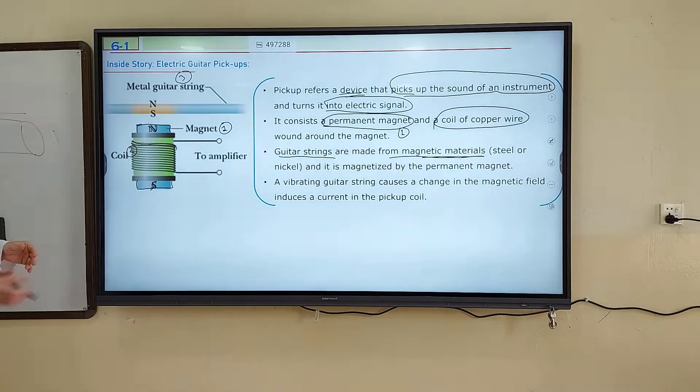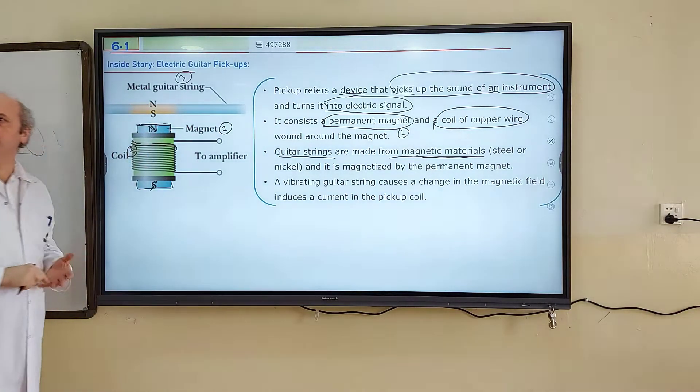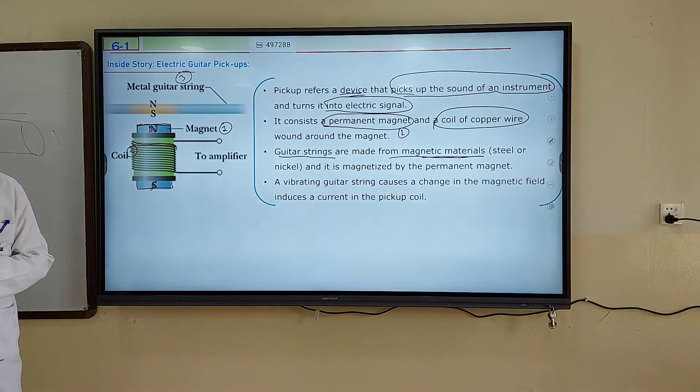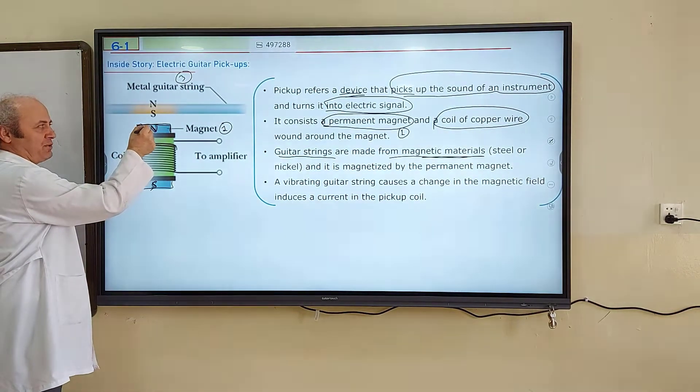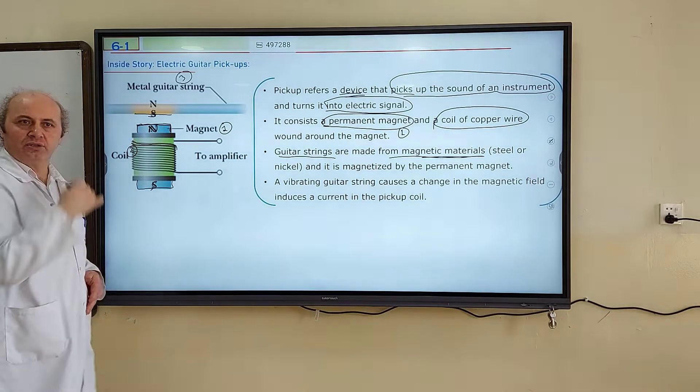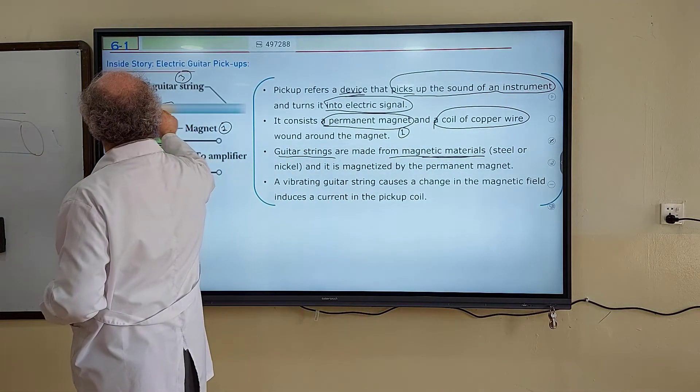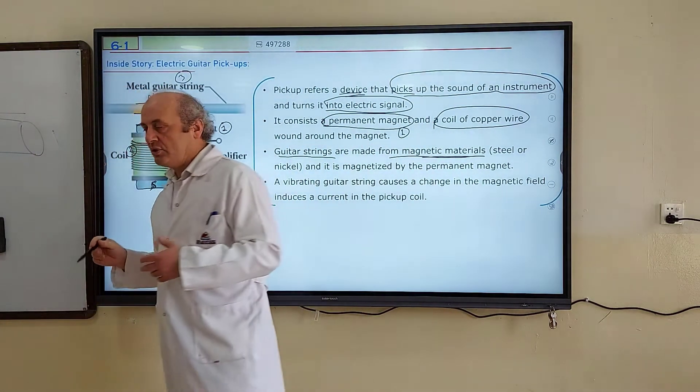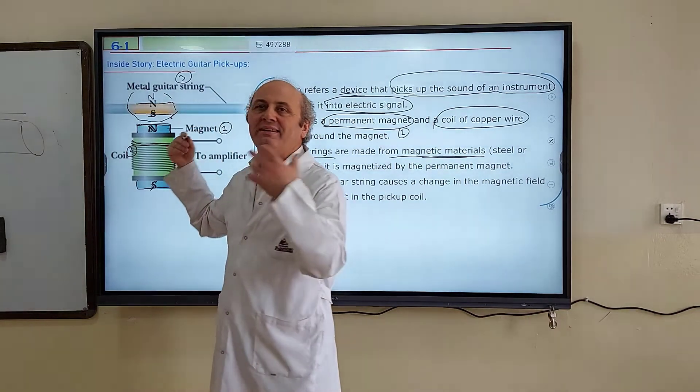Similarly in here, this permanent magnet is kept closer to the guitar string. This guitar string becomes magnetized. Of course, close side must be S because N faces to as close side. Close surface of the string is going to be S. Far surface is going to be N. So this segment of this guitar string will be magnetized.